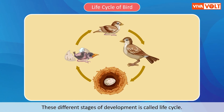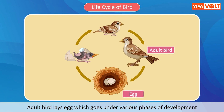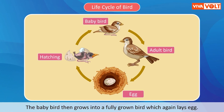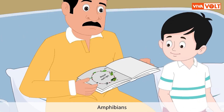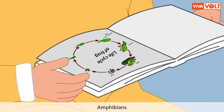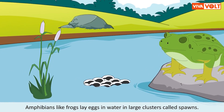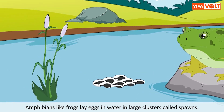In the egg, the developing baby goes through different stages of development before it is ready to hatch out. These different stages of development are called the life cycle. An adult bird lays an egg, which goes through various phases of development and finally matures, and the baby bird comes out. The baby bird then grows into a fully grown bird, which again lays eggs.